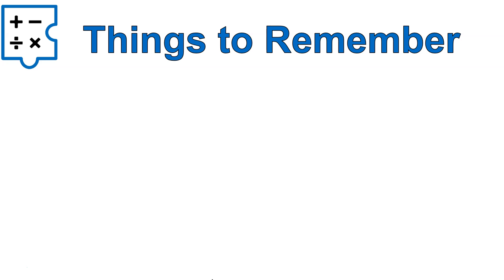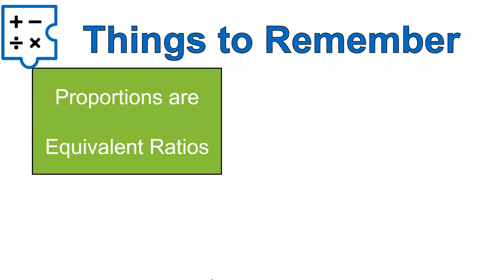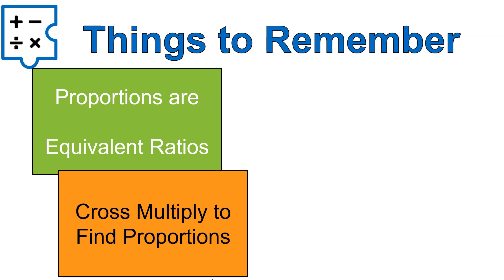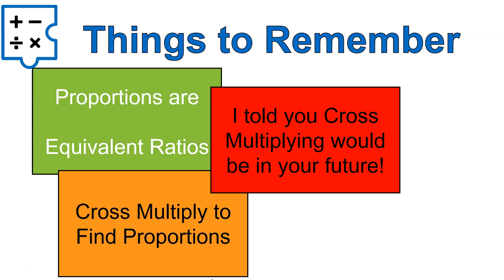All right, let's take a look at what we've gone over today. We talked about proportions being equivalent ratios. We looked at cross-multiplying to find proportions. And I want to remind you, in previous lessons, I've told you cross-multiplying would be used in your future. It's one of the tools we use all the time with ratios and proportions. So you need to become familiar with that cross-multiplying. I hope that lesson was helpful for you. Have a wonderful day.